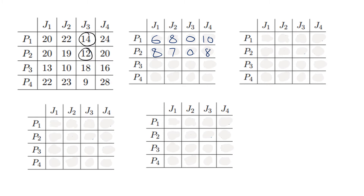Once again we go to the third row. For person three, the smallest value is 10. So we subtract all the elements in the third row by 10. 13 minus 10 gives us 3, and 10 minus 10 gives us 0, then 18 minus 10 gives us 8, then 16 minus 10 gives us 6.